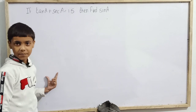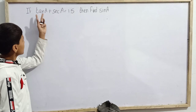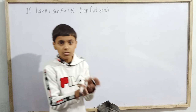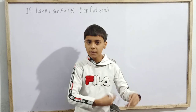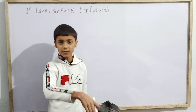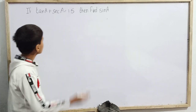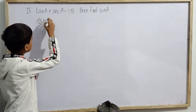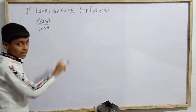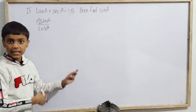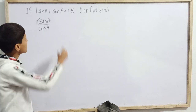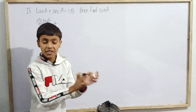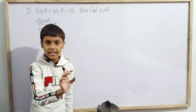To begin the solution, we first write tan(a) in terms of other trigonometric ratios. We know that tan(a) = sin(a)/cos(a), so we can write sin(a)/cos(a). And sec(a) can be written as 1/cos(a). So tan(a) + sec(a) becomes sin(a)/cos(a) + 1/cos(a).